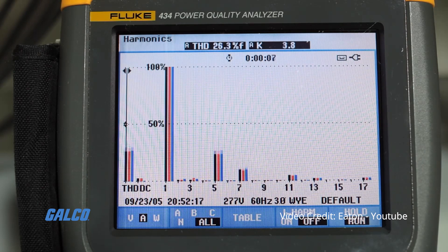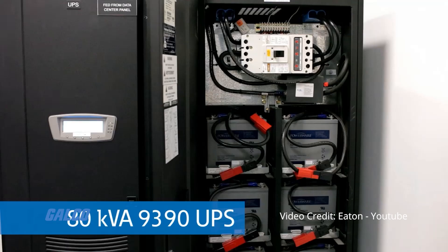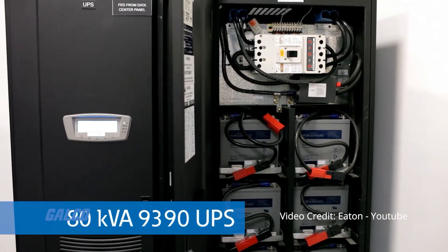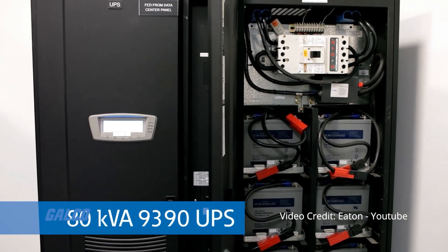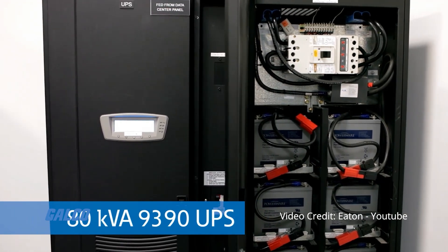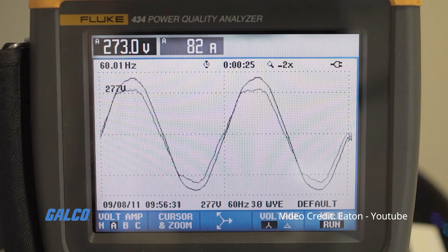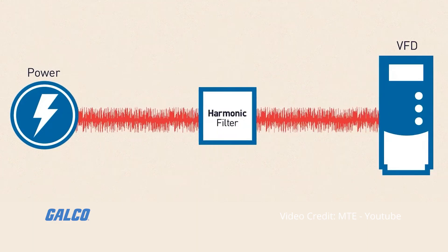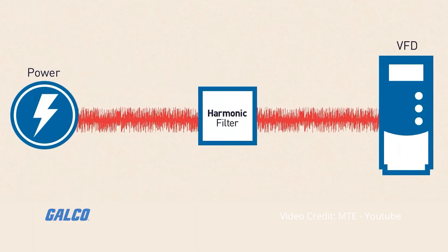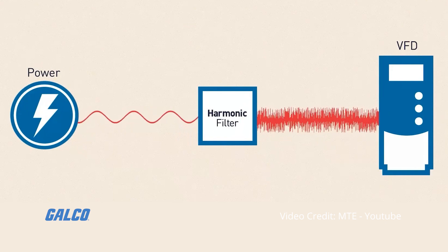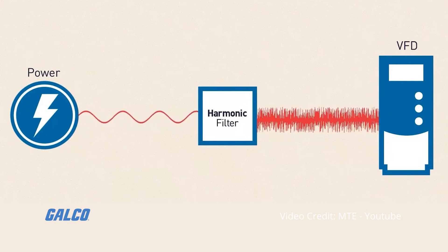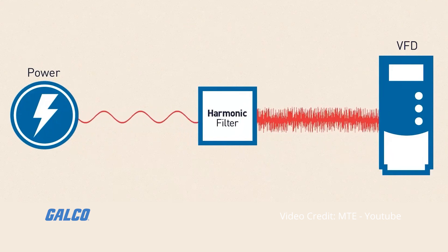The distortion in question which requires limitation is known as harmonics, which are electric voltages and currents on an electric power system that can cause power quality problems. Harmonics are created by equipment with nonlinear loads that draw in current in abrupt short pulses.